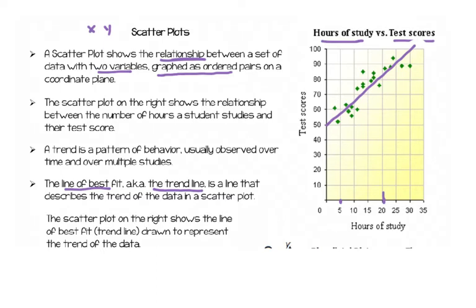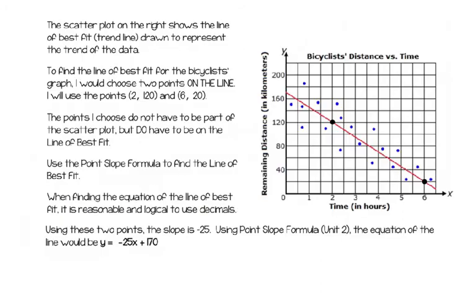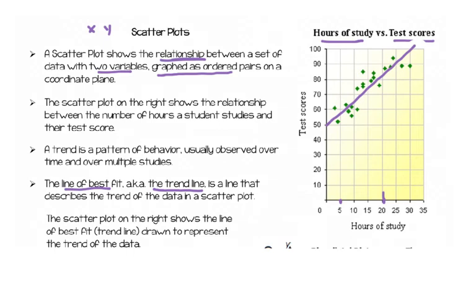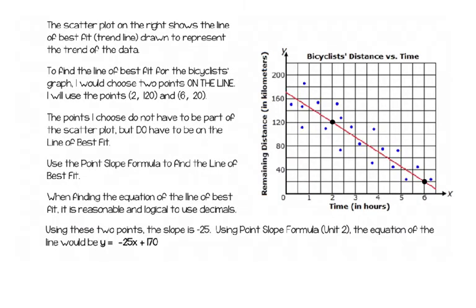This scatterplot shows the line of best fit drawn to represent the trend data. The red line is the trend line I drew. The purple dots are the data — how much time bicyclists had been going versus how much distance they had left to go. When they hadn't been biking for very long, they still had a long ways to go — about 150 miles left after 15 minutes. When it had been about 5 hours and 15 minutes, they only had about 20 miles left.